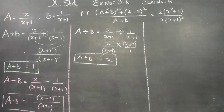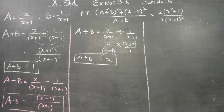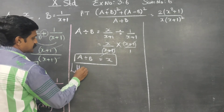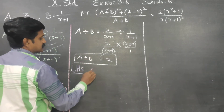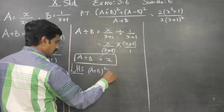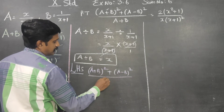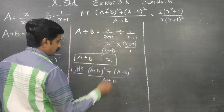All answers are ready: a plus b is green, a minus b is red, a divided by b is white. I will now write the LHS. My LHS is: a plus b whole square plus a minus b whole square, all divided by a divided by b.